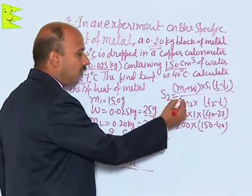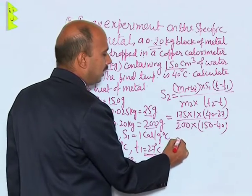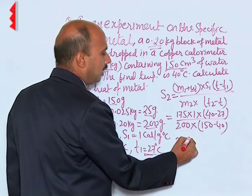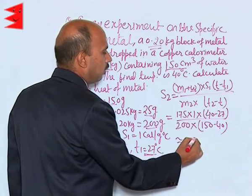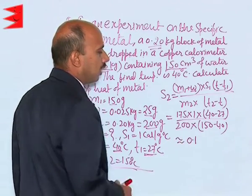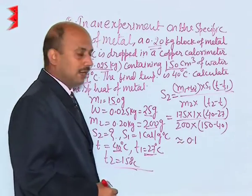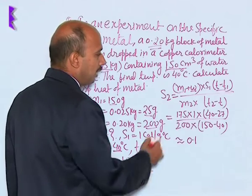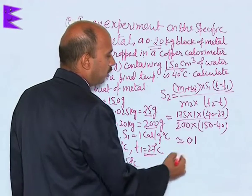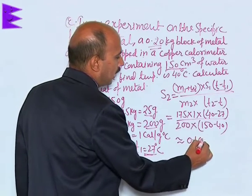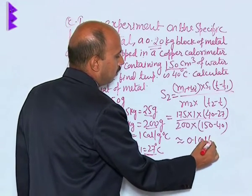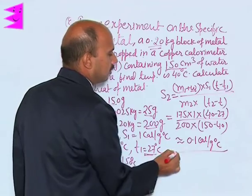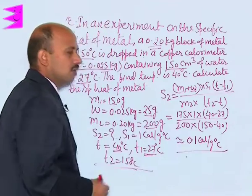When you solve it, you will get approximately 0.1 calorie per gram degree Celsius. So the specific heat of the metal is 0.1 calorie per gram degree Celsius.